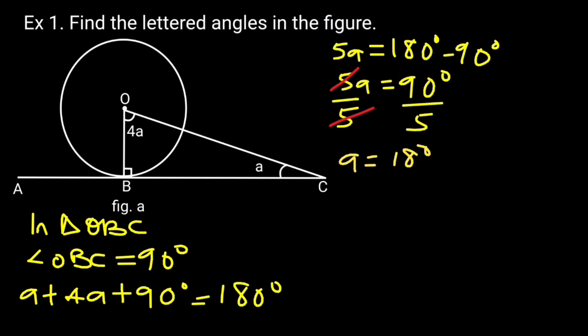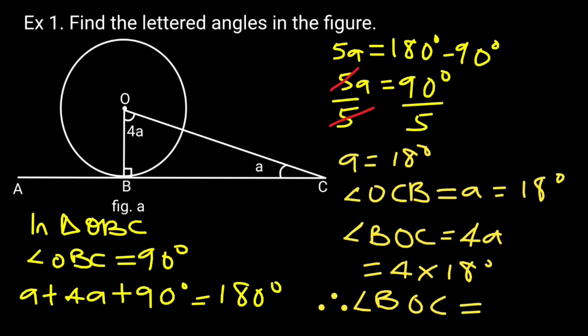Hence, angle OCB is equal to A, which is equal to 18 degrees. Angle BOC is equal to 4A, which is 4 times 18. Angle BOC is equal to 72 degrees.